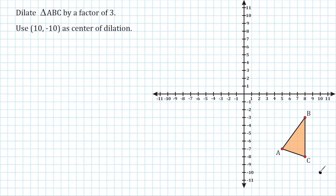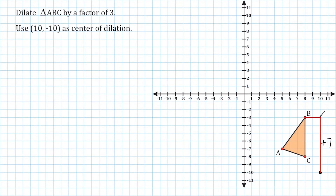We're going to start with the center of dilation point and see how it relates to point B of my triangle. You want to move upwards first — that's called a rise. So starting here and going upwards, we're going to stop when we are directly across from point B, and then move to the left. We went up a distance of seven and to the left two. Because we were going in a negative direction in X, that's minus two. So the rise is positive seven and the run is negative two.